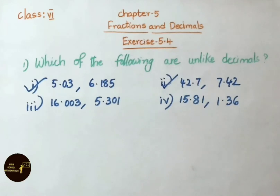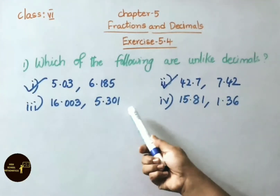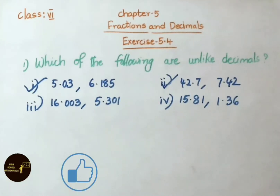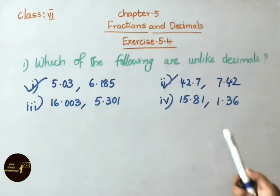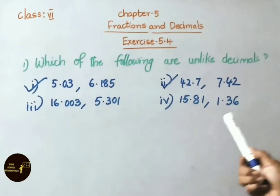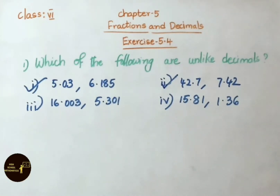See the third one: 16.003 and 5.301. Both numbers have 3 decimal places, so they are like decimals. See the fourth one: 15.81 and 1.36. Both numbers have 2 decimal places — equal decimal places — so these are like decimals. Therefore, the unlike decimals in the given question are the first and second pairs.